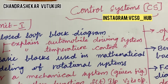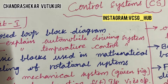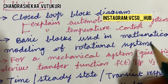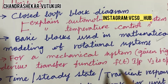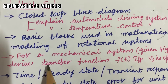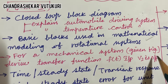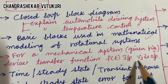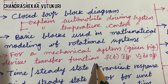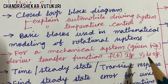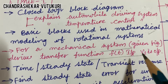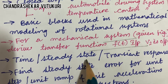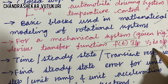Let's look at the basic blocks used in mathematical modeling of rotational systems. For a mechanical system, given a figure, derive a transfer function where f(t) is the input and v2 is the output. Such types of questions may also occur in the question paper.